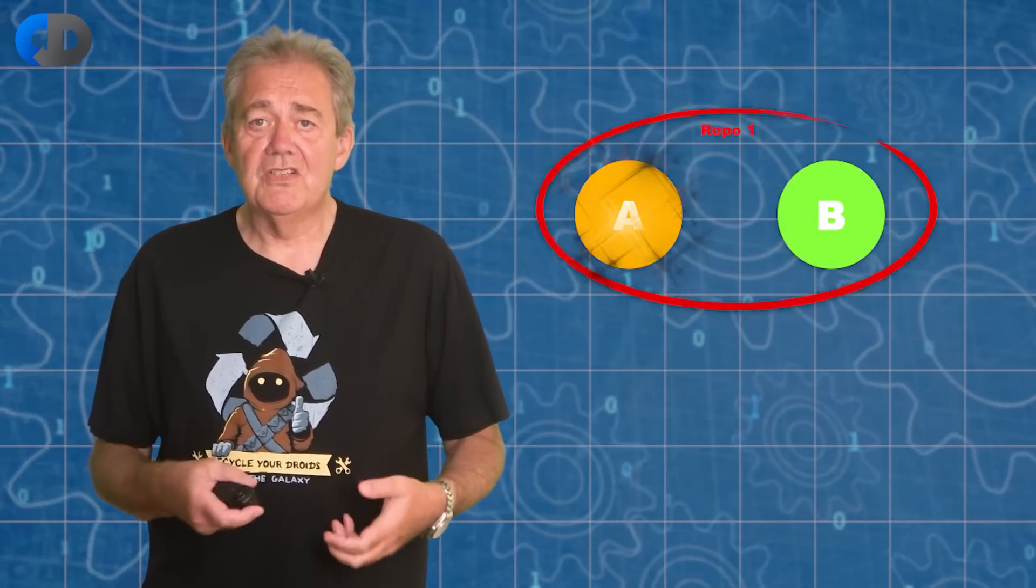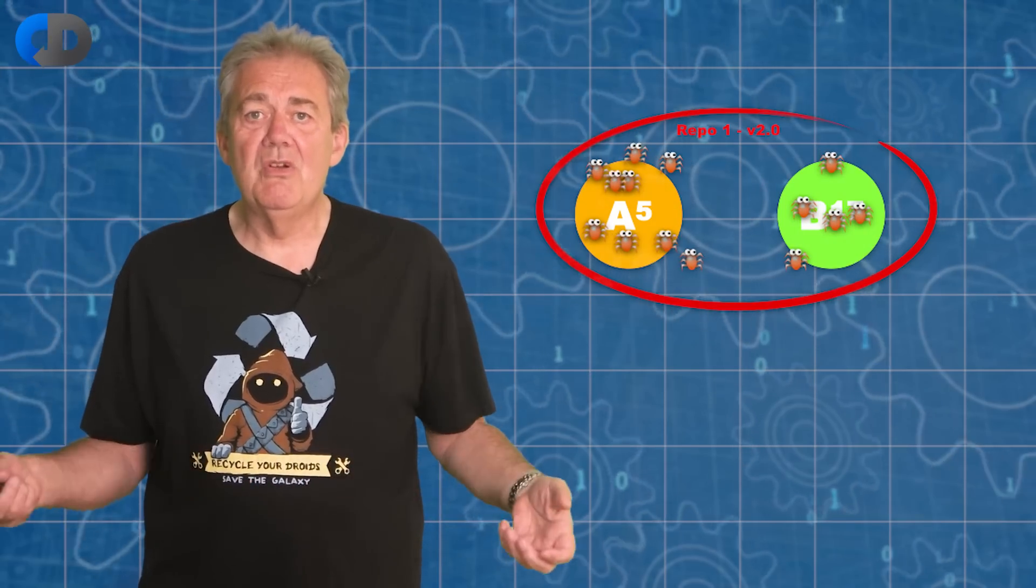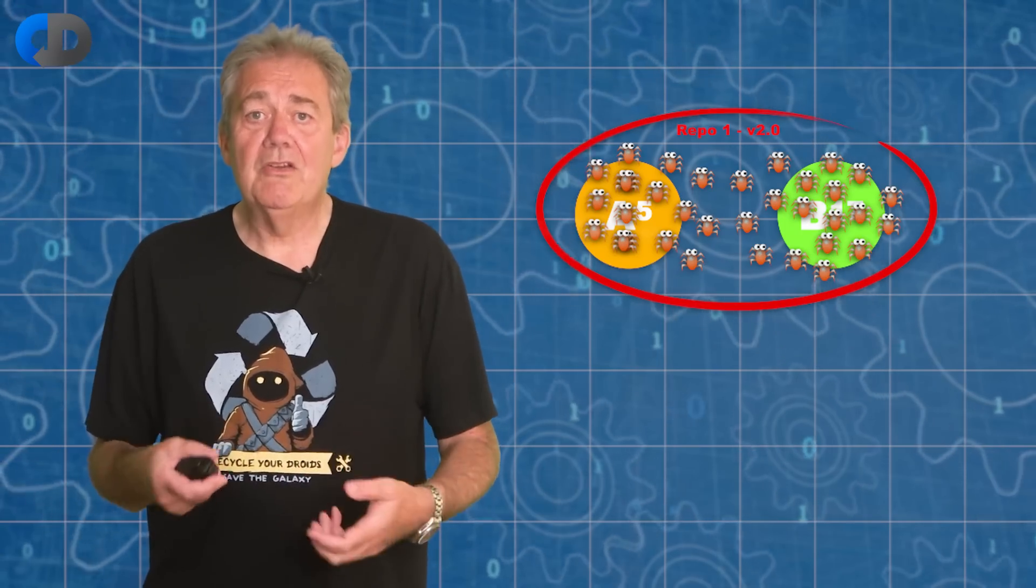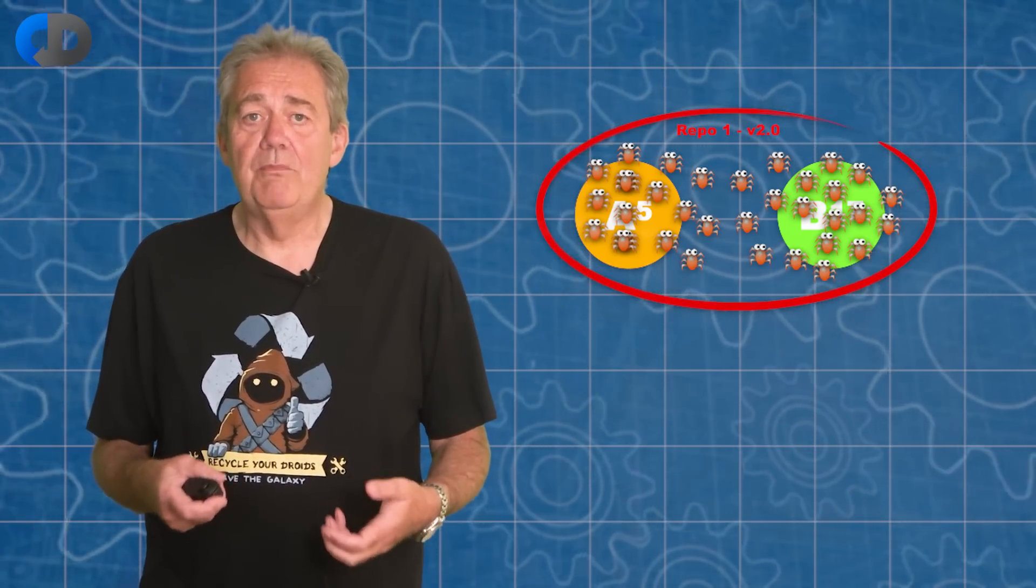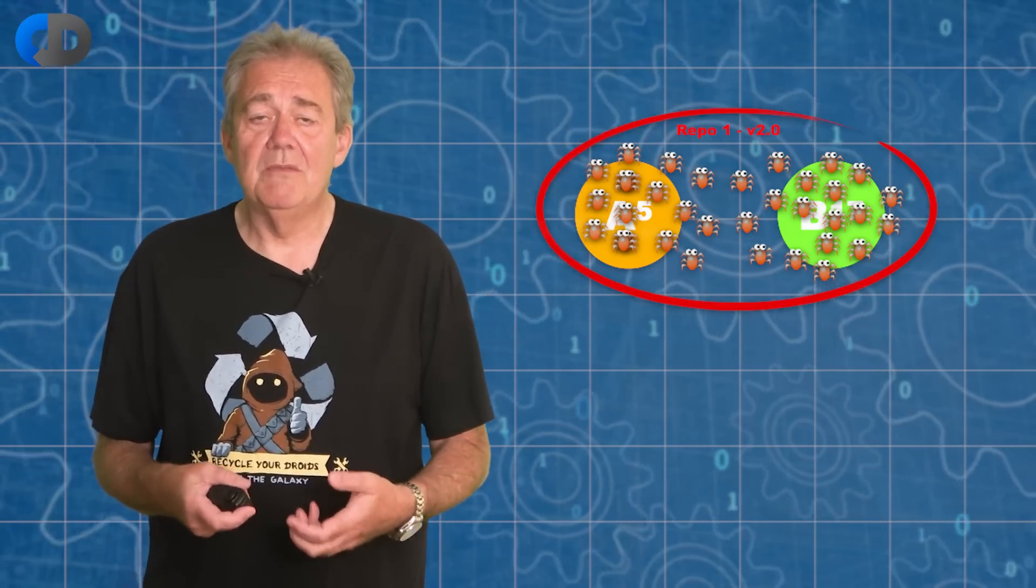If version 5 of service A plus version 17 of service B is represented as version 2 of our application and version 2 has 34 bugs, we can only create exactly that combination of software complete with its 34 bugs and start to fix them if we have version controlled those relationships somewhere.